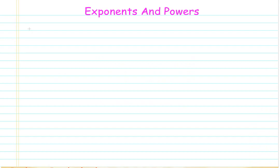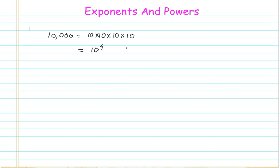Hello everyone and welcome to the chapter on exponents and powers. Here we will learn why we require exponents and powers, and what a new form called exponents is. Let me explain with a simple example. Take the number 10,000. I can expand this as 10 multiplied by 10, four times. So 10 x 10 four times becomes 10 to the power of 4. Here 10 is known as the base and 4 is known as the power.